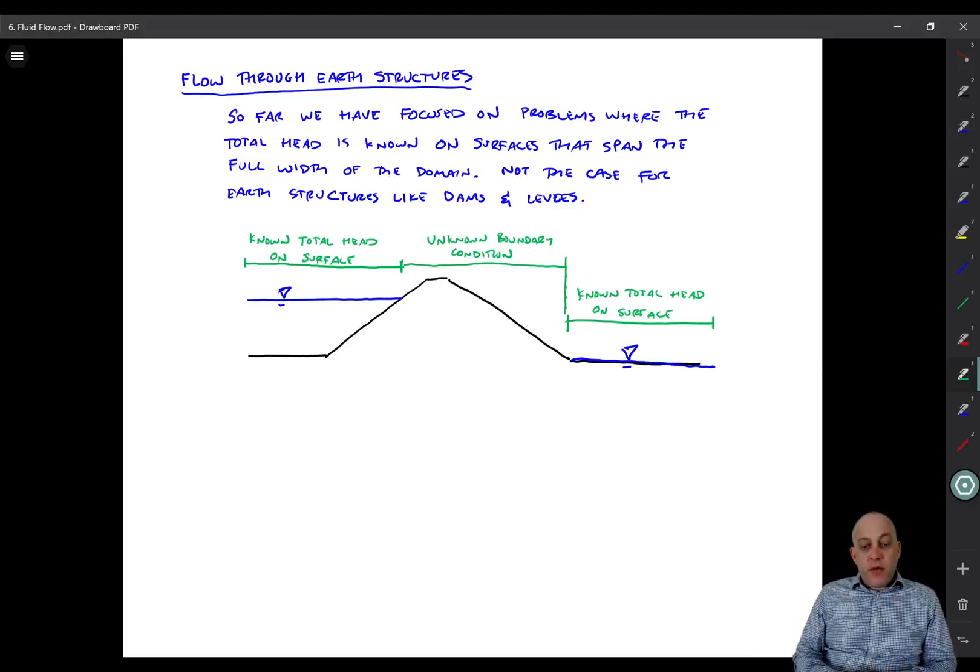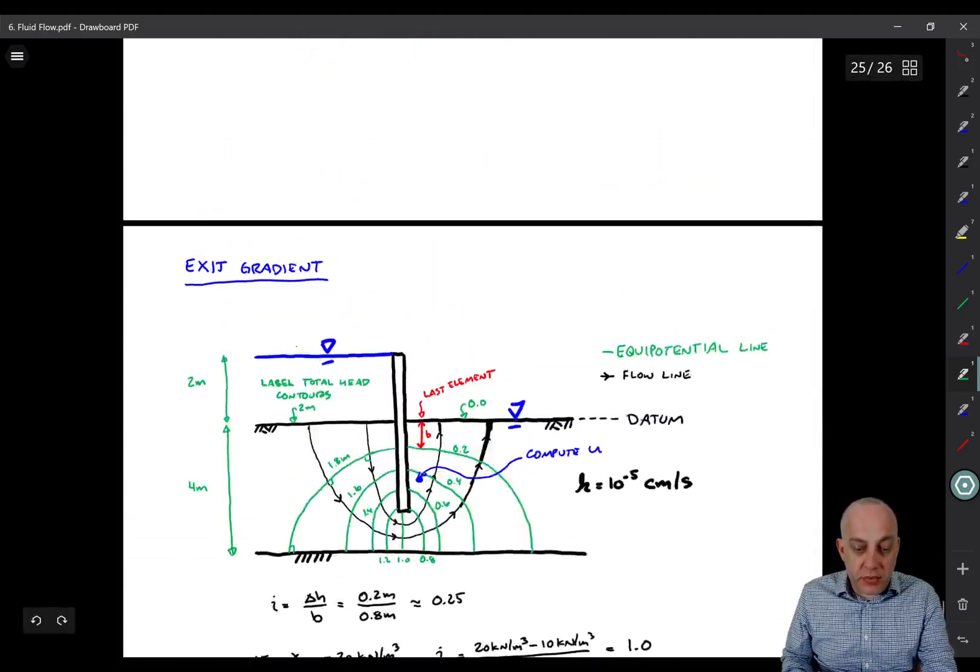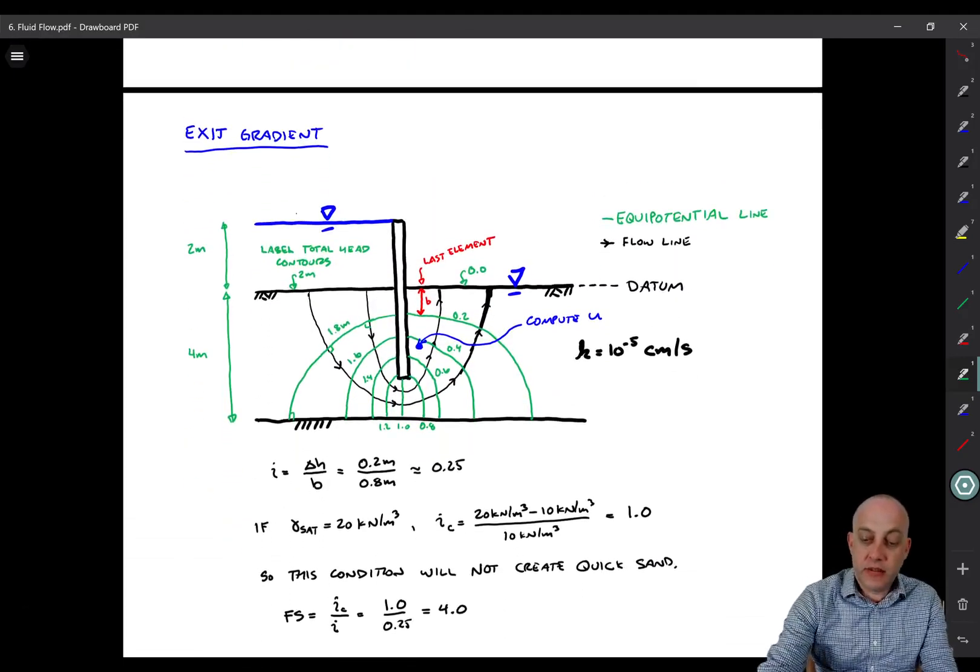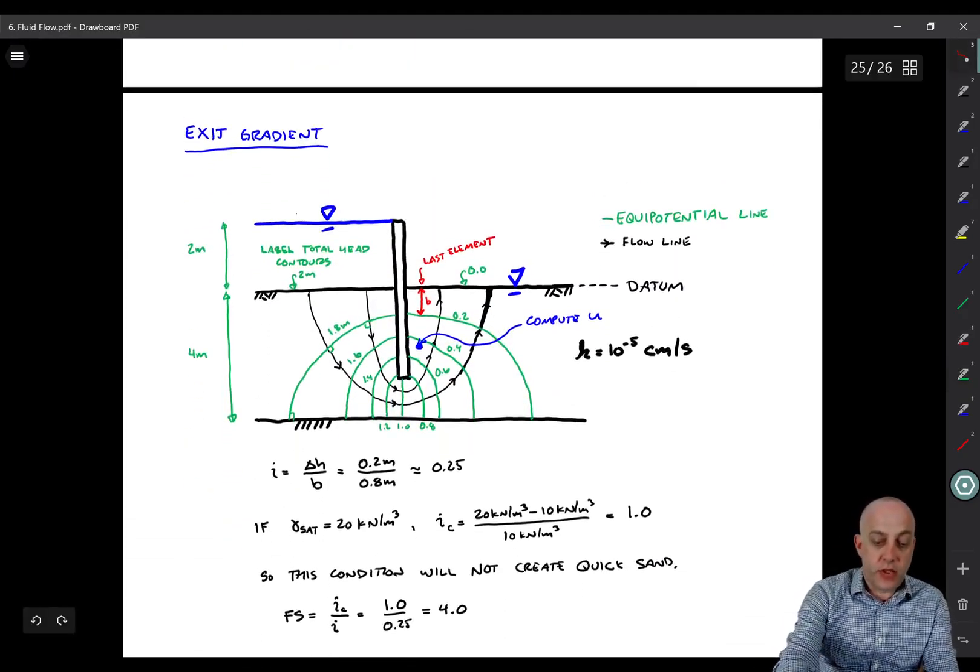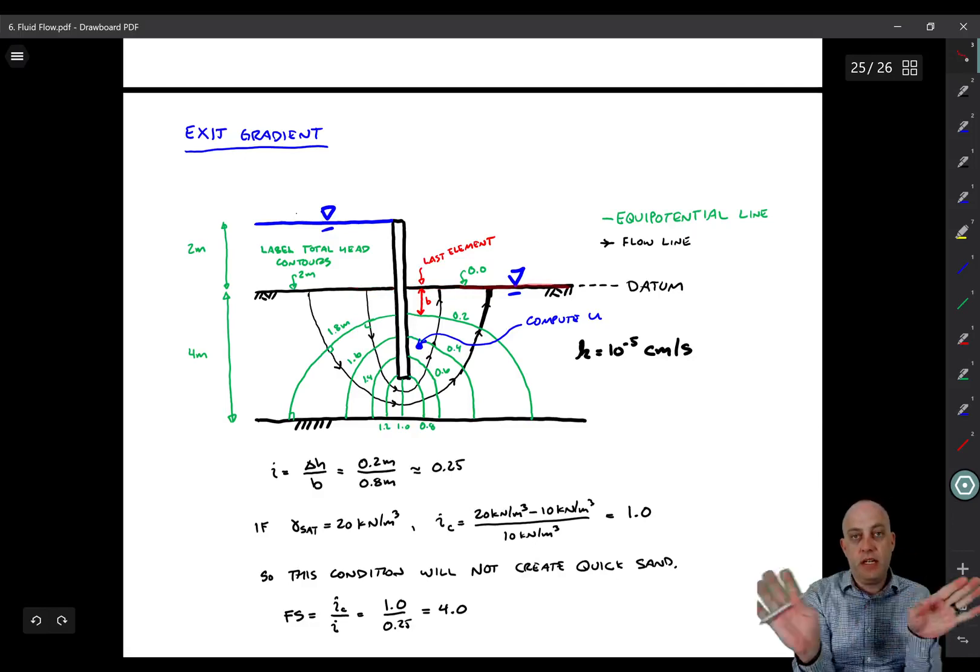Alright, in this video we're going to cover flow through earth structures. And the reason I want to do this is that in the sheet pile problem up here, we had a pretty clear understanding of what the total head was on the soil surfaces on both sides all the way through the entirety of the domain.